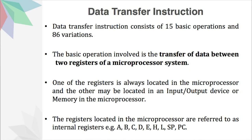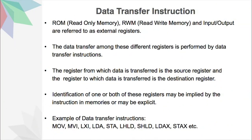Here A refers to the accumulator, and A, B, C, D, E, H, L are general purpose registers. Similarly, we will have our external registers which are ROM (read-only memory), RWM (read-write memory), and input-output — these are known as our external registers. The data transfer among these registers is performed by the data transfer instructions. The identification of one or both of these registers may be implied by the instruction or may be explicit.